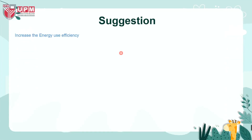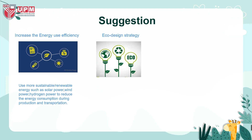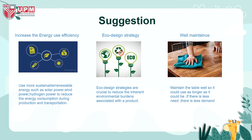Suggestions: 1. Increase energy use efficiency — use more sustainable, renewable energy such as solar power, wind power, and hydrogen power to reduce energy consumption during production and transportation. 2. Eco design strategy — eco design strategies are crucial to reduce the inherent environmental burdens associated with a product. 3. Well maintained — maintain the table well so it can be used as long as possible. If there is less need, there is less demand.